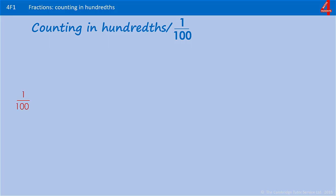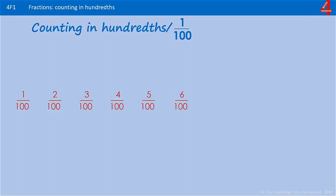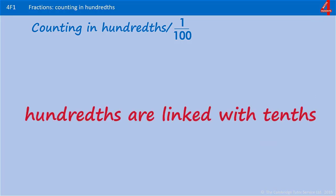When we look at the fraction one hundredth, we just mean one divided by one hundred. If we're counting in hundredths, every hundredth we add on, the numerator goes up by one. We can keep doing that in hundredths until we get to 99 hundredths, and then if we add another hundredth on, we have a whole — one hundred hundredths.